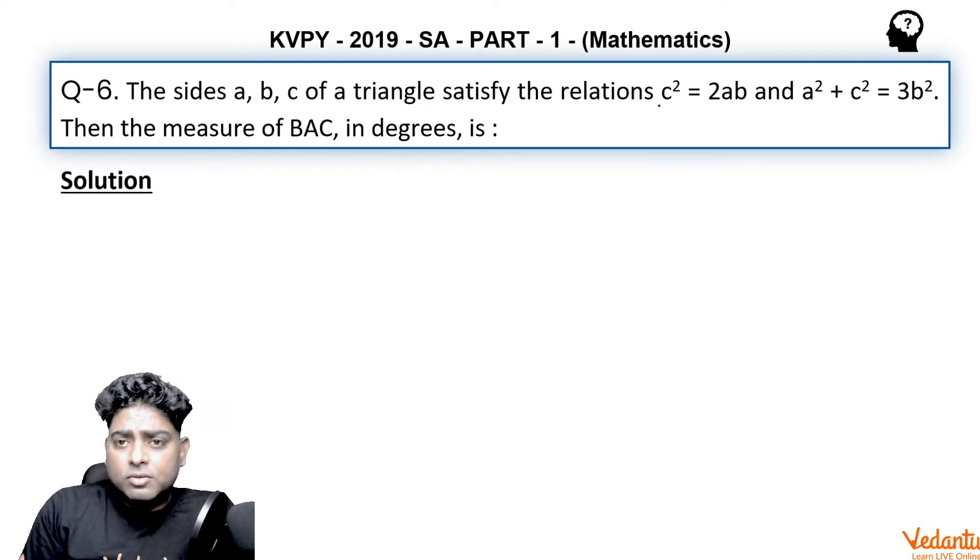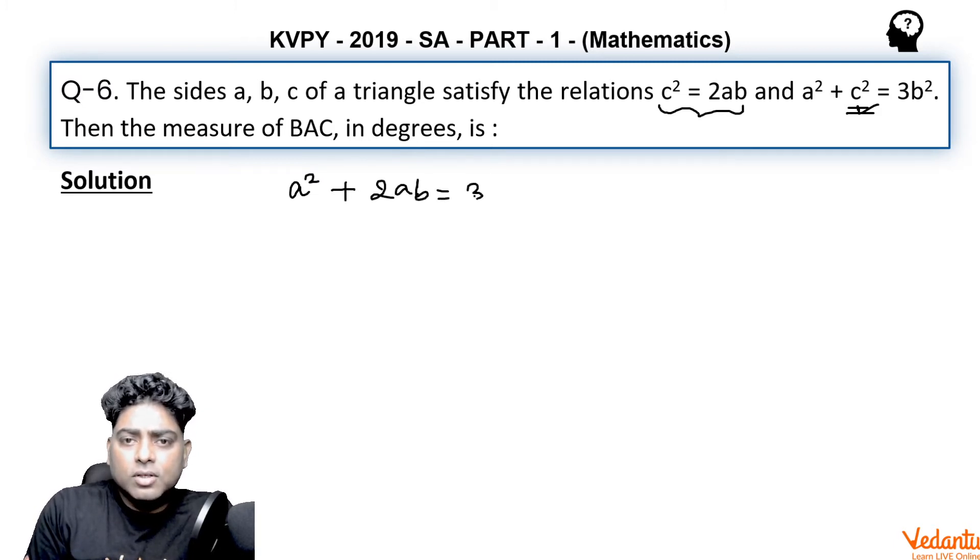As you can see that c² is given 2ab, again c² is appearing here. So c² is related with a and b. It's better to eliminate c² here. So we can easily see that we will get a² plus c² is 2ab and is equal to 3b².